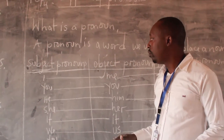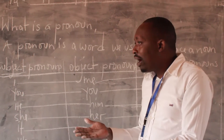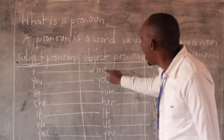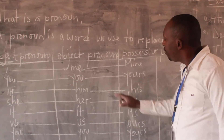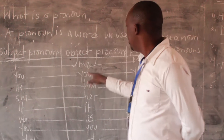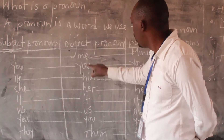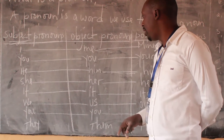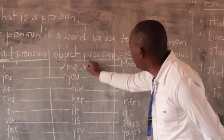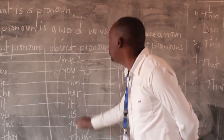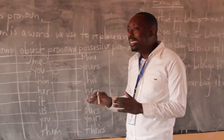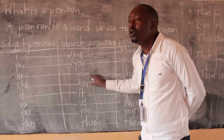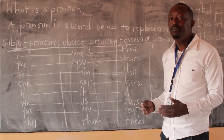Remember, subject pronouns are pronouns — they can take the place of a noun. Now, here we have other types of pronouns. They are very different from these ones. These are: me, you, him, her, it, us, you, and them. These pronouns are called object pronouns. They act as the objects of the verb. They are used after the verb to show us someone or something that receives an action.